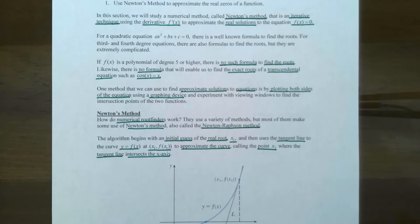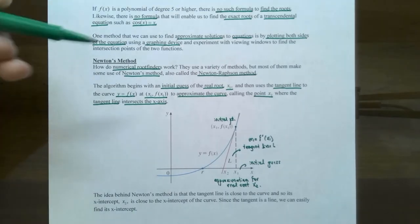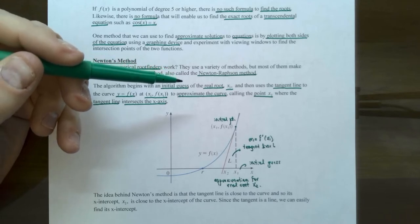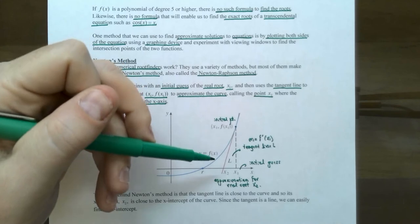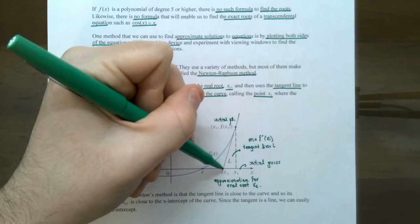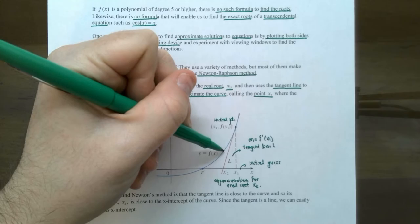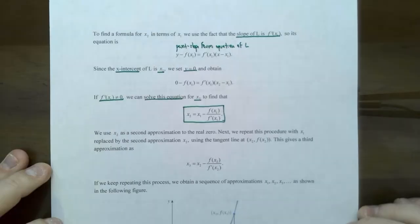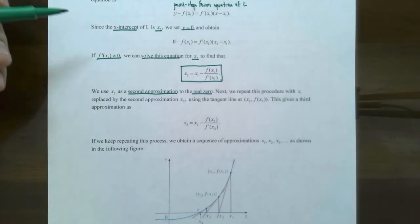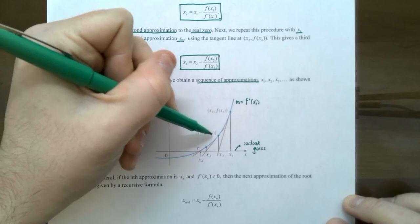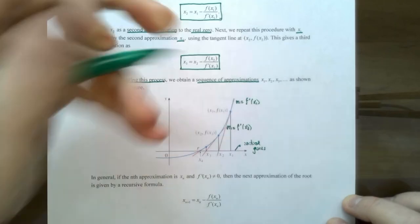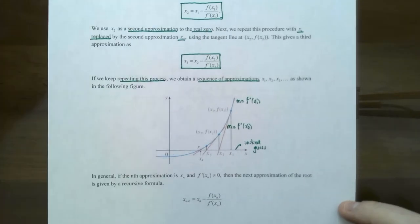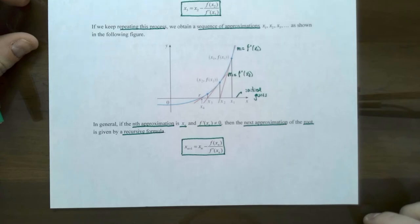Let's see how this works with this graph. This method will give you a sequence of approximation roots. We can repeat this process by taking x₂, replacing x sub 1 with x sub 2, f(x₂), and f'(x₂), getting an x closer to the x-intercept.